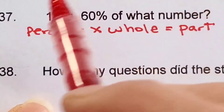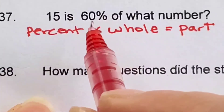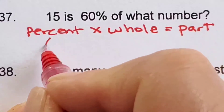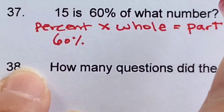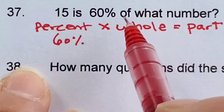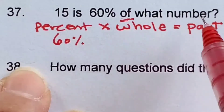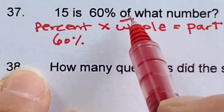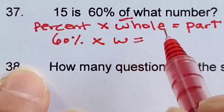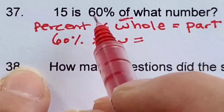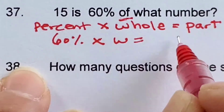I've written out my percent formula and now we're just going to plug in the numbers where appropriate. 60% goes under percent. The whole number we don't know. Recall that the whole number typically comes after the word 'of,' and they're asking 'of what number,' so we don't know the whole number — that's our unknown. We can just name the whole W. And the part is 15, since 15 is 60% of what number.